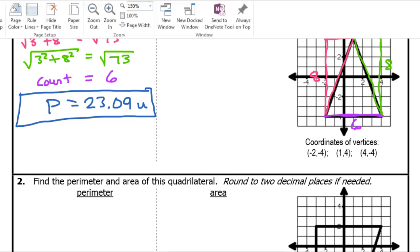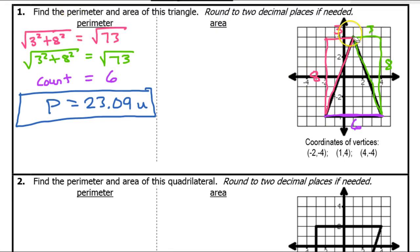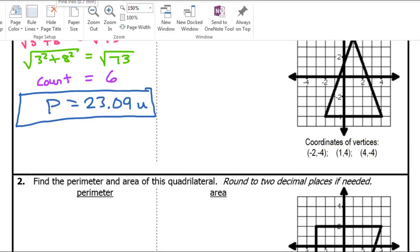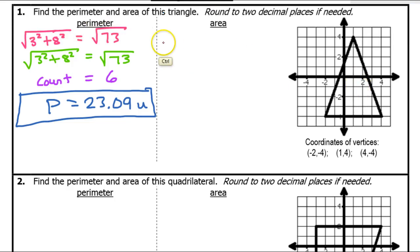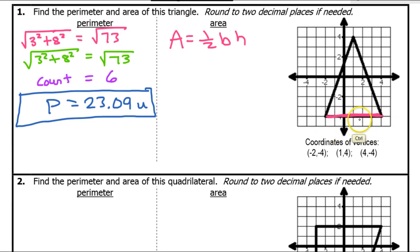I'm going to erase this as I go back to do the area. For the area, this is a triangle. I know that the area of a triangle is one-half base times height. So this is the base right here — the base is 6. And the height, what I'm tracing in green, is the height, and that is 8.